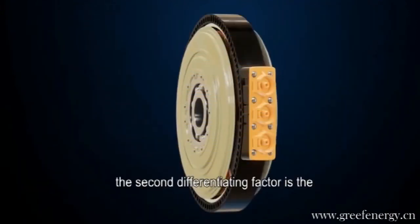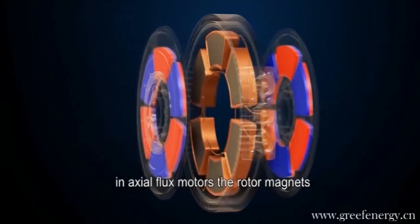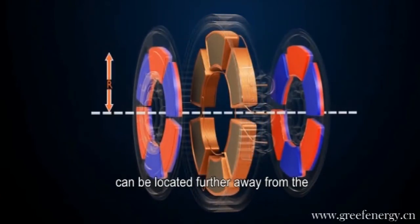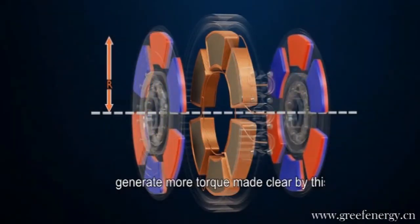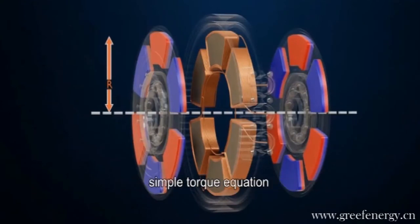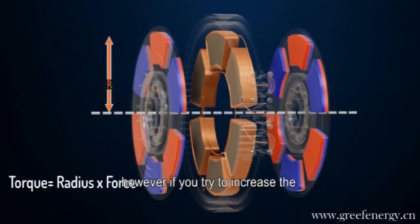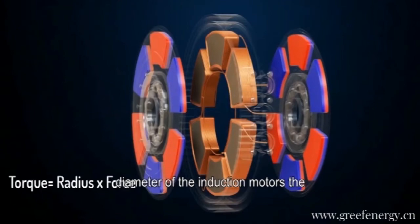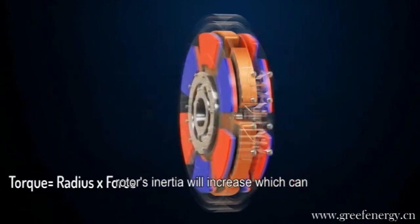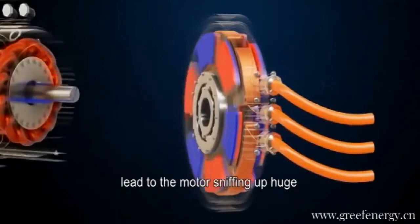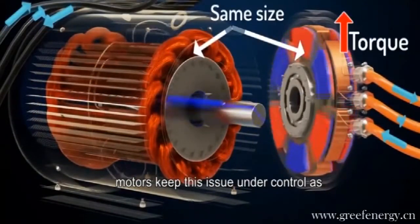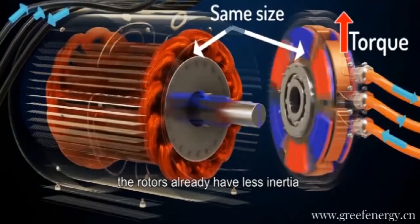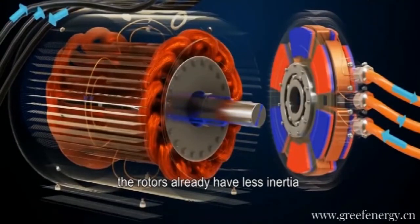The second differentiating factor is the larger diameter. In axial flux motors, the rotor magnets can be located further away from the central rotating axis. This larger radius allows the motor to generate more torque, made clear by this simple torque equation. However, if you try to increase the diameter of the induction motors, the rotor's inertia will increase, which can lead to the motor sniffing up huge currents during the start. Axial flux motors keep this issue under control, as the rotors already have less inertia.